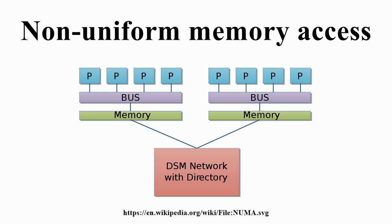For problems involving spread data, NUMA can improve the performance over a single shared memory by a factor of roughly the number of processors. Another approach, utilized mainly by non-NUMA systems, is the multi-channel memory architecture, which increases the number of simultaneous memory accesses. Of course, not all data ends up confined to a single task, which means that more than one processor may require the same data. To handle these cases, NUMA systems include additional hardware or software to move data between memory banks.